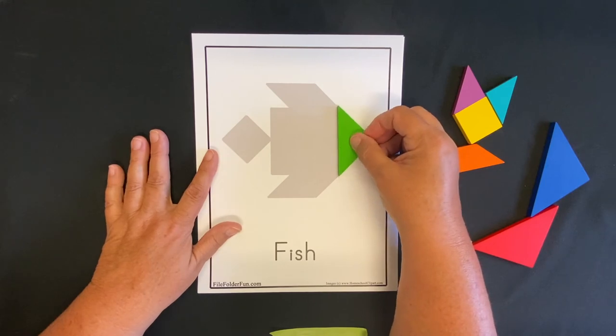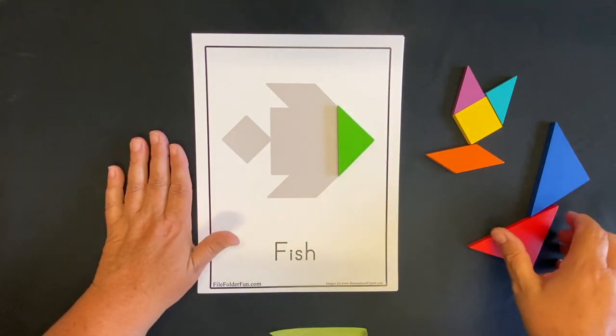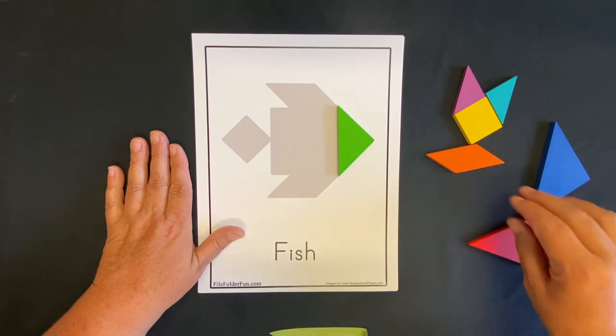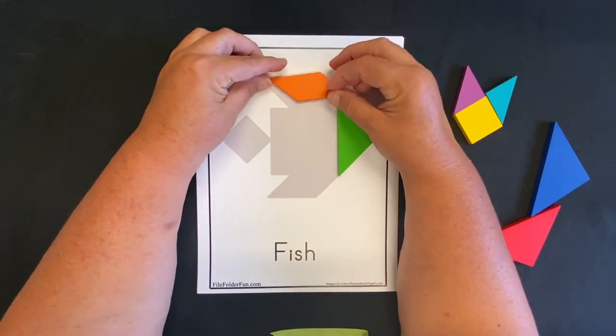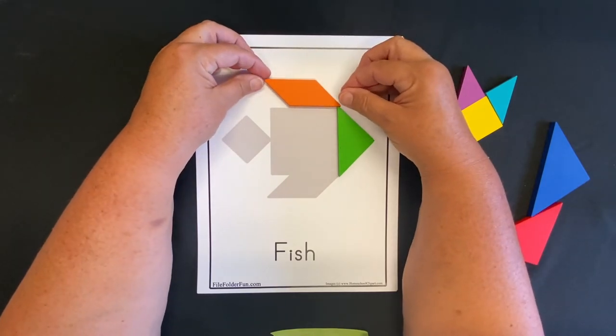And remember, for it to be a true tangram puzzle, you have to use all the shapes. They have to be laying flat. They can't be laying on one another, but you've got to use all of them. Oh look, this one's easy. The parallelogram fits right there.